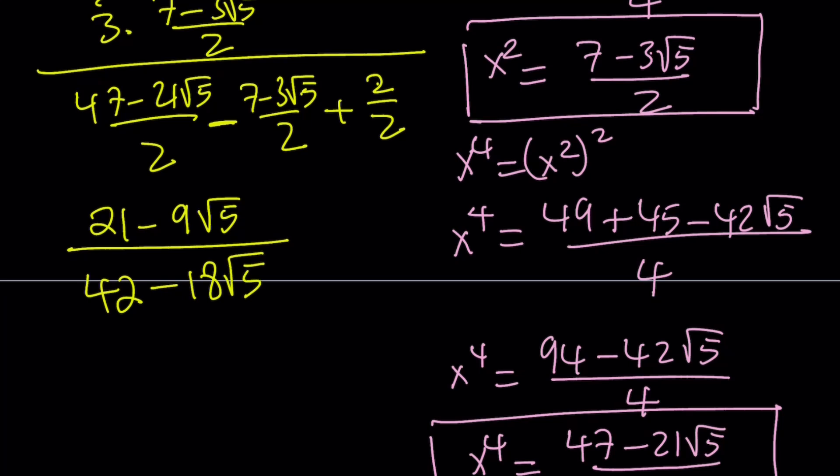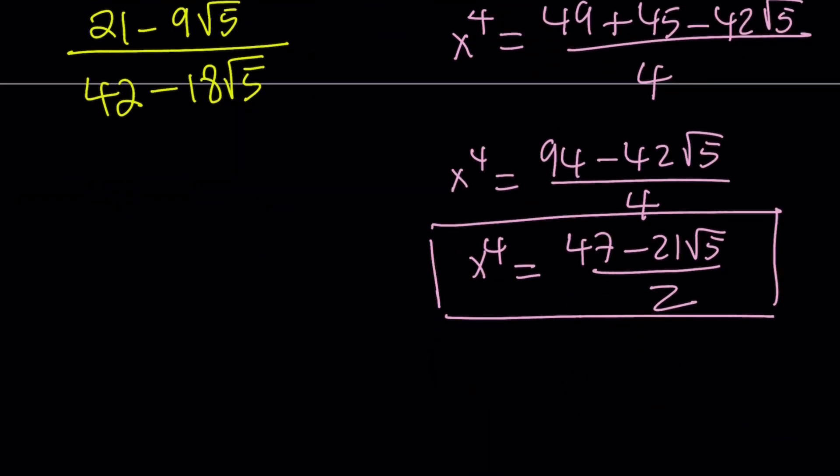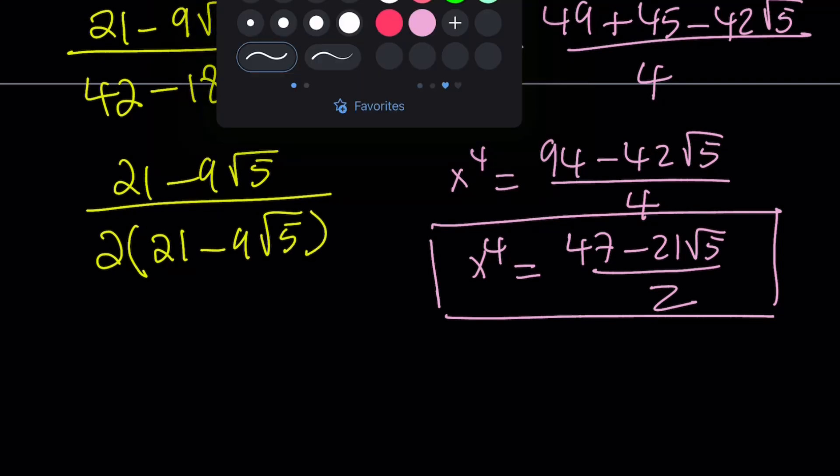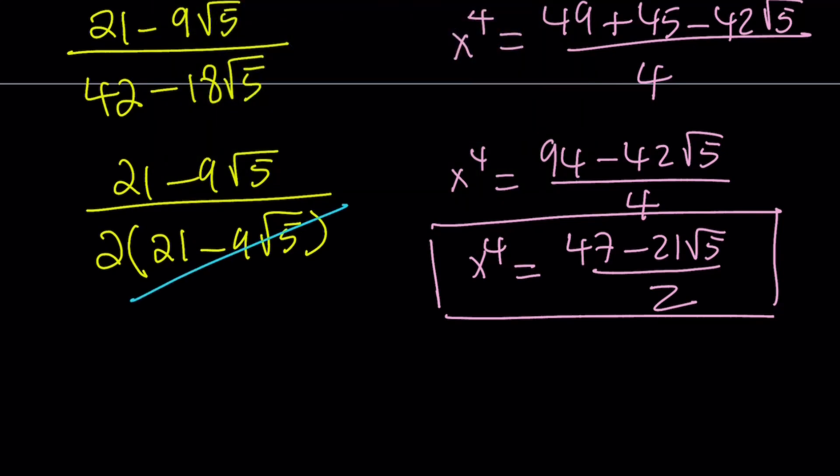Now what does this tell you? Do you want to rationalize the denominator, or do you want to do something else? Well, I just noticed that 42 and 18 have a common factor, which happens to be 2. So I can take out a 2 here. And guess what? When I do, I get something super-duper nice, because I get the same thing. So we can go ahead and just cancel out the 21 minus 9 root 5.